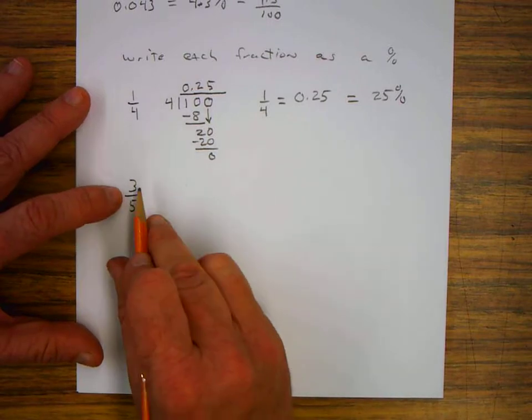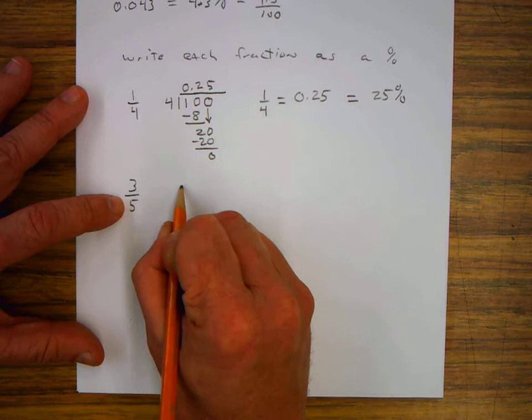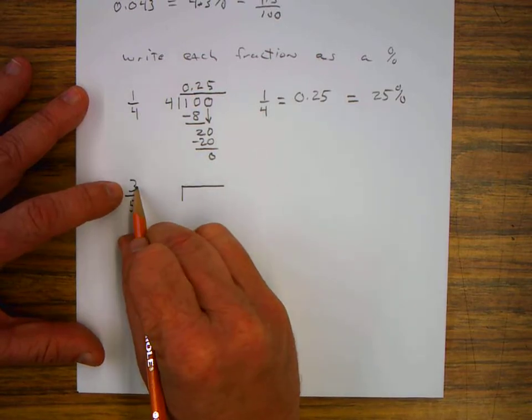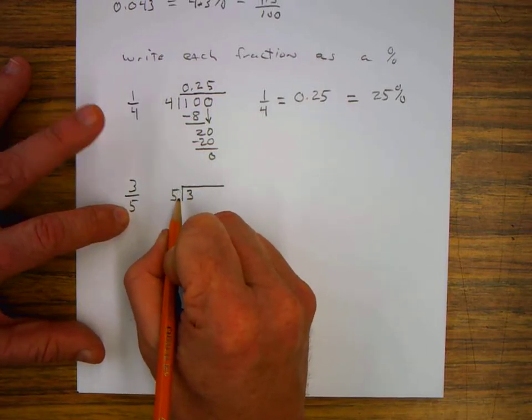On this next problem, we have 3 fifths, and we want to convert it to a decimal and a percent. So I put the 3 inside, the numerator inside, and the denominator goes on the outside, 5.